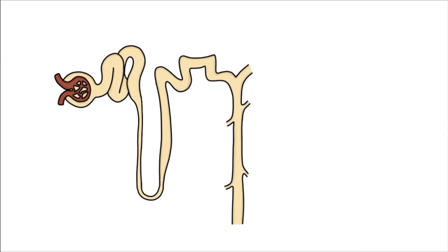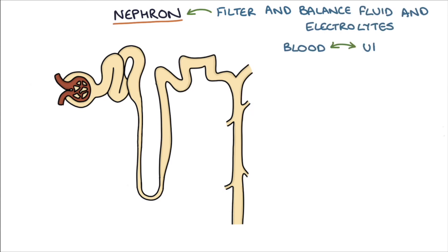To go through the mechanism of action of thiazide diuretics, we first need to have a basic understanding of the function of the kidney. The kidney is made up of about 1 million tiny tubes called nephrons, which are responsible for filtering and balancing fluid and electrolytes between the blood and the urine.